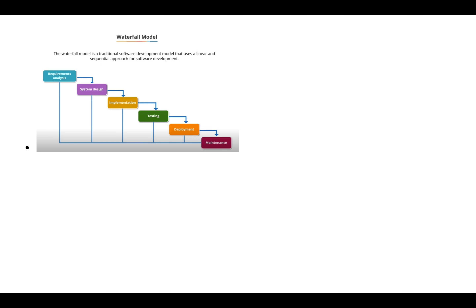Let's understand exactly what is the waterfall model and what were the shortcomings, so that we moved towards agile. The waterfall model is a traditional software development model that uses a linear and sequential approach. In software development we have different stages like requirement analysis, system design, implementation, testing, deployment, and maintenance. If we are following the waterfall model, we start from the first step — requirement gathering — spend some time on it, and once requirement analysis is complete for the entire project, we subsequently move to designing.